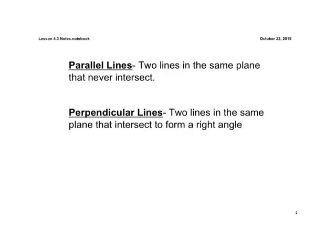We have two definitions, so pause it here. Write these down in your journals. Parallel lines: two lines in the same plane that never intersect. Perpendicular lines: two lines in the same plane that intersect to form a right angle. So pause it and write those down, please.